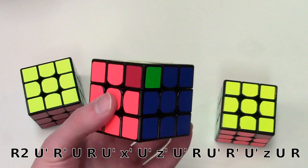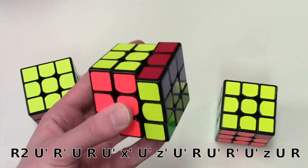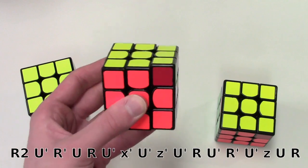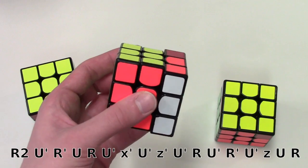So the first move as I said is an R2. Now you could double flick it, but I don't recommend double flicking the first move of an algorithm because it'll get your hand out of position and it'll be harder to do the other moves fluently. So I would just do two single flicks.